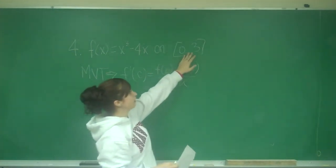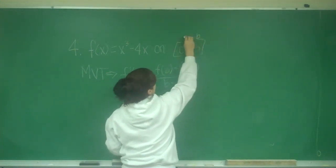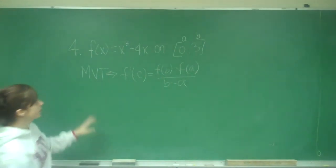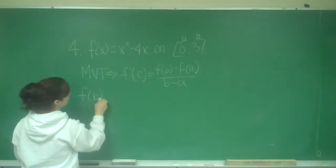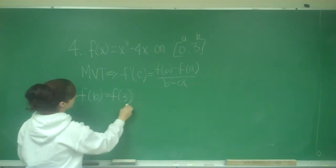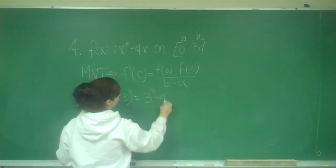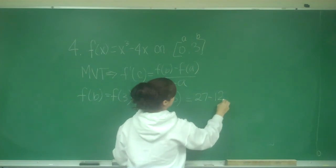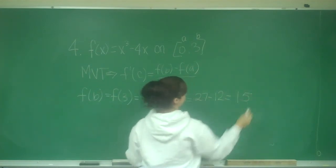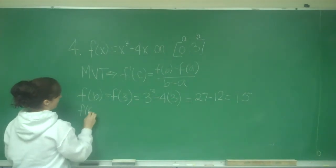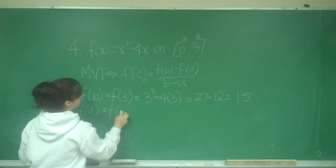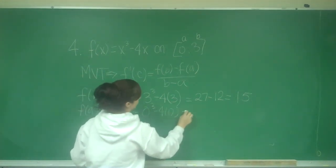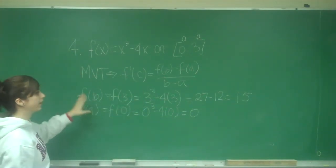All we're going to do is plug in — 3 is going to be our B and 0 is going to be our A. So f of B equals f of 3, which equals 3 cubed minus 4 times 3, which equals 27 minus 12, which is 15. And then f of A equals f of 0, which is 0 cubed minus 4 times 0, so that's 0.